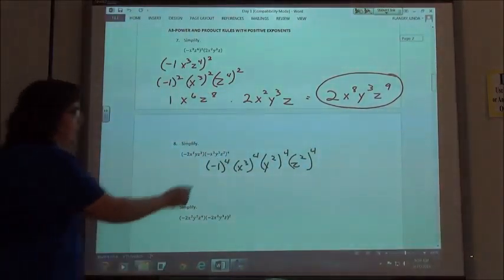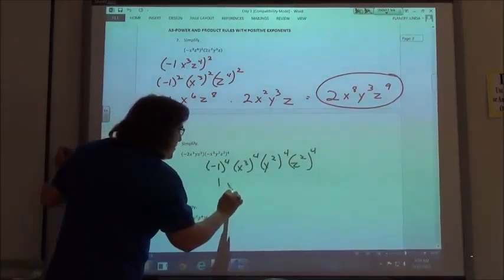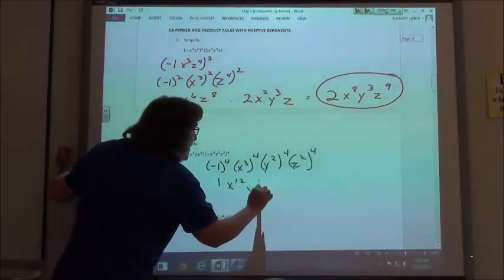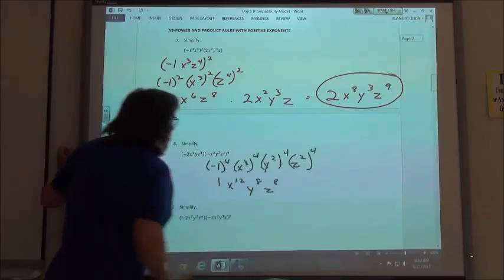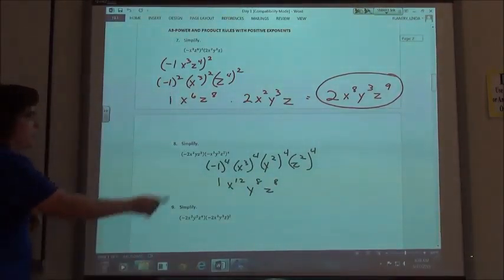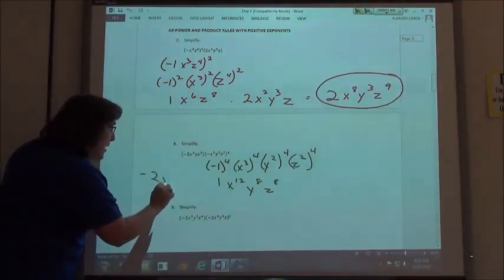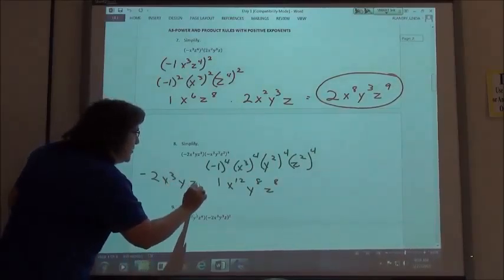So negative 1 to the fourth is 1. I get x to the twelfth, y to the eighth, and z to the eighth when I multiply my exponents. I'm going to multiply that by the negative 2x to the third, y, z to the third,